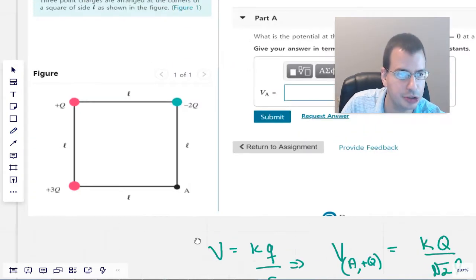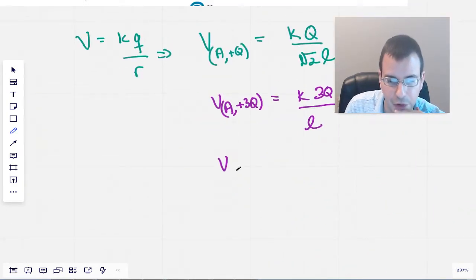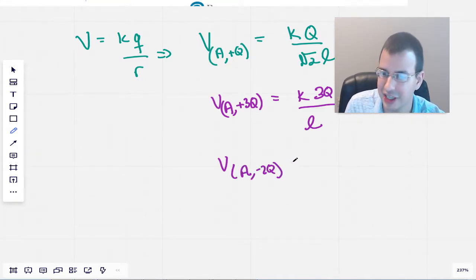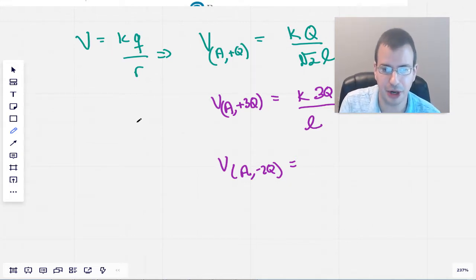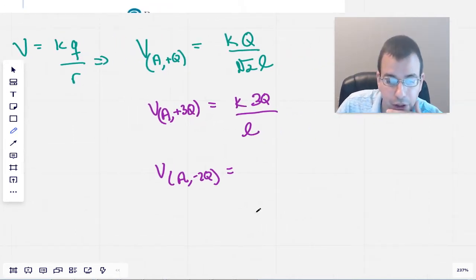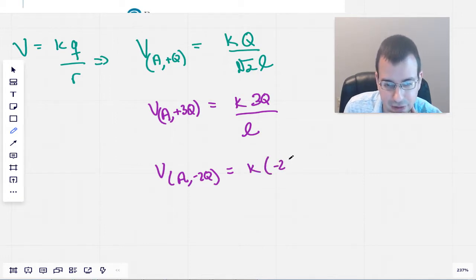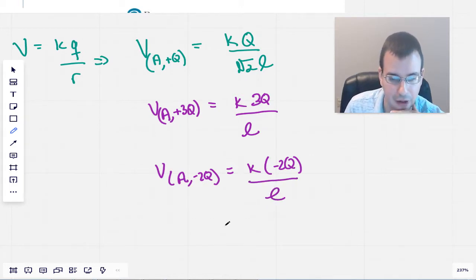Then we have negative 2Q. Voltage at A due to negative 2Q. This is not a standard notation, so don't expect everyone to understand it. This is just kind of how I do my internal work. So potential at A due to negative 2Q would be K negative 2Q, this is multiplication not subtraction, all over L.